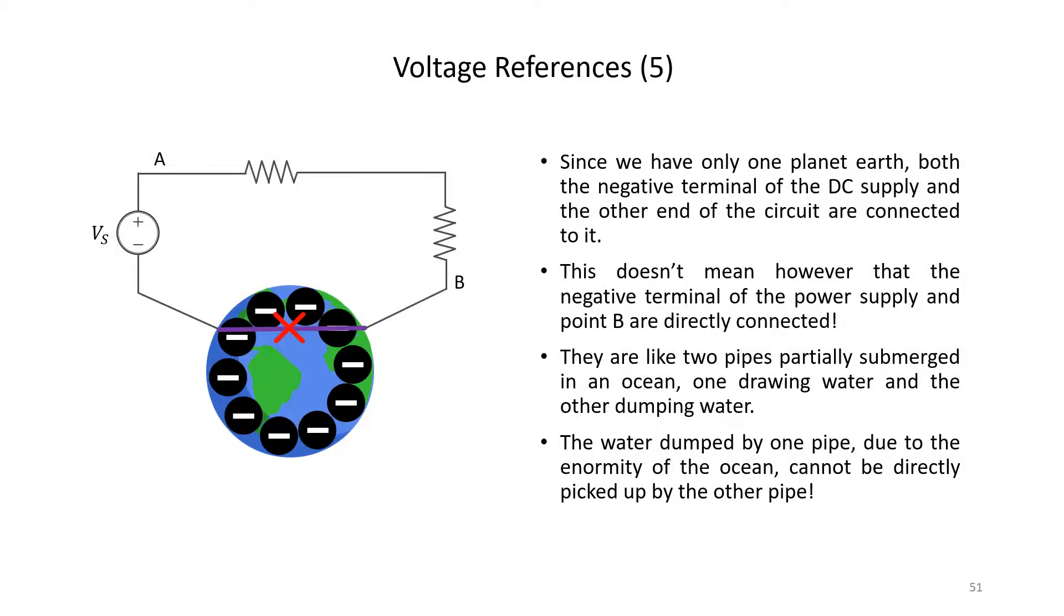In the previous slide we showed two separate earths, one connected to one end of the circuit and one connected to the other end, but in actual fact we've only got one earth, so both ends of the circuit will be connected to the same planet. But this doesn't mean that the negative terminal of the power supply and point B are directly connected in a way that electric current can flow between them.